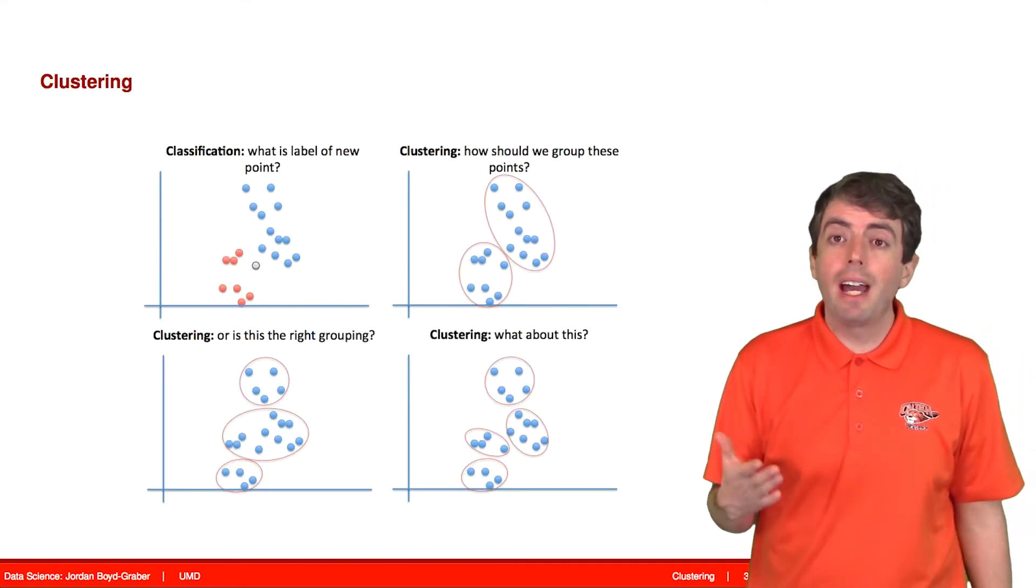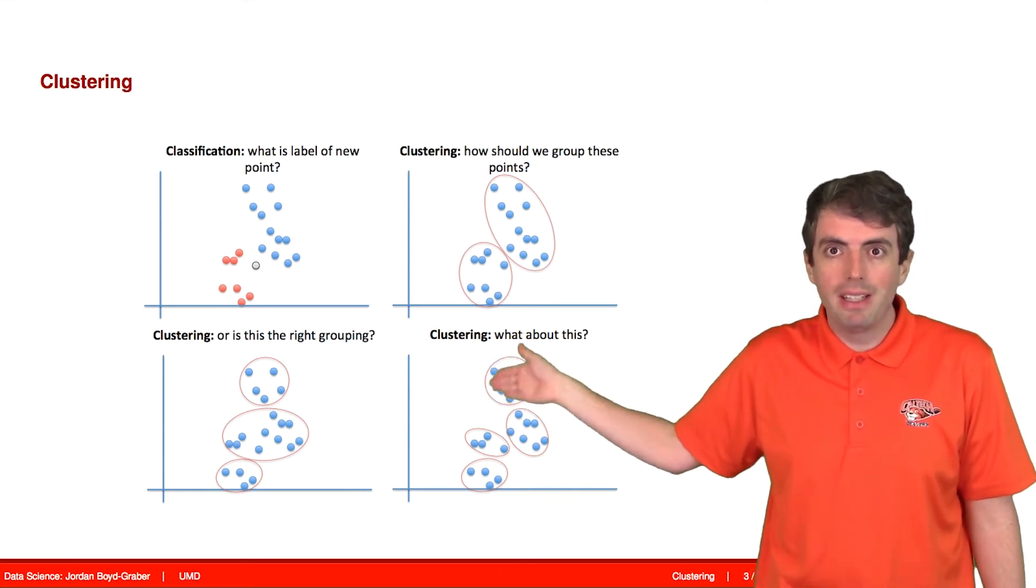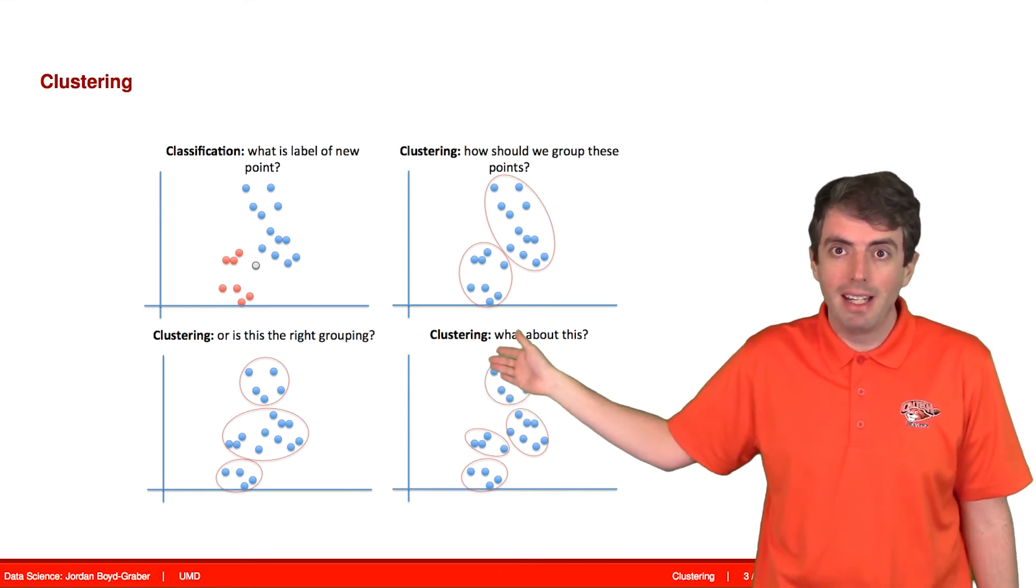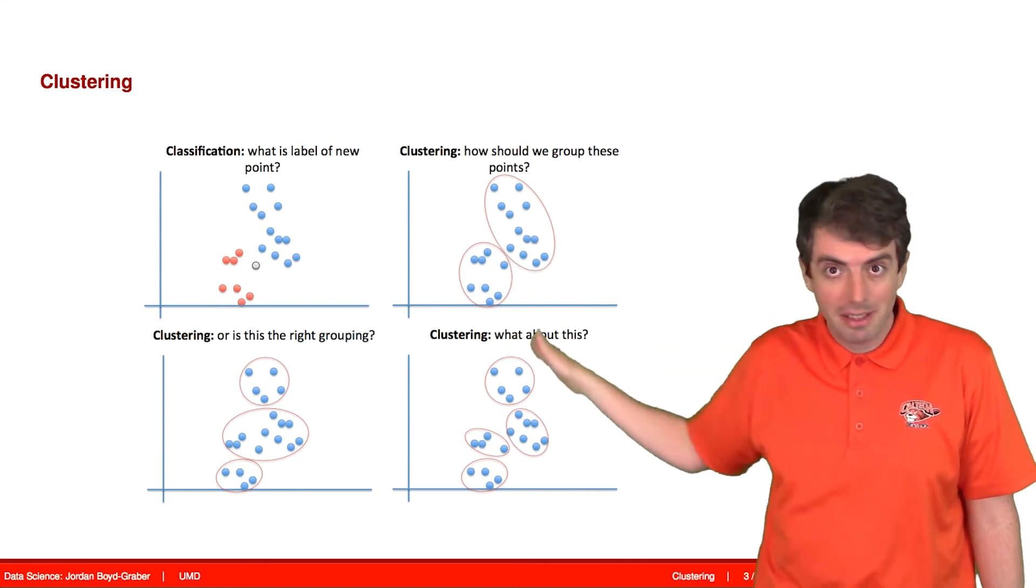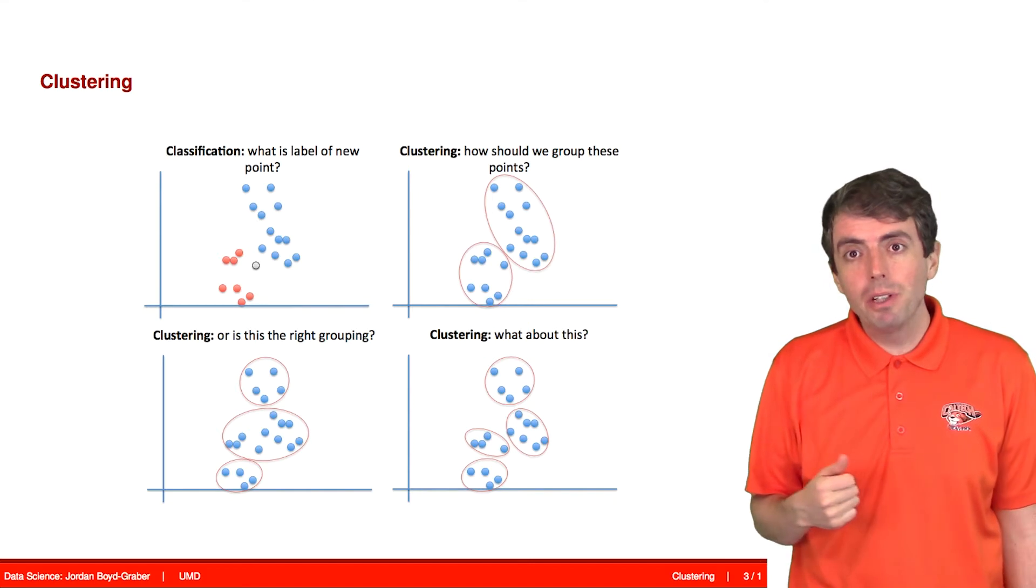In classification, you have labels. For example, you have red points and blue points and you need to find some line that splits the red from the blue. Do you do a good job of separating the red from the blue?